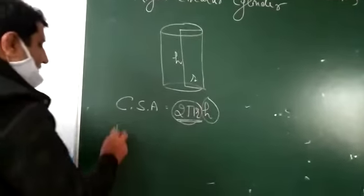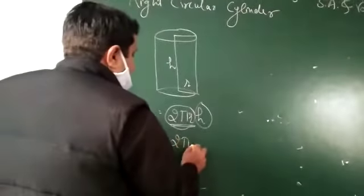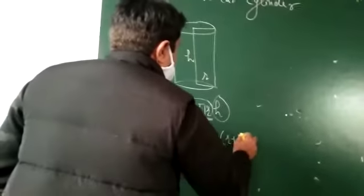Now, total surface area? 2πrh. 2πr(r + h).